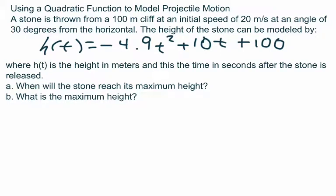In this video, we will be using a quadratic function to model projectile motion. A stone is thrown from a 100-meter cliff at an initial speed of 20 meters per second at an angle of 30 degrees from the horizontal.